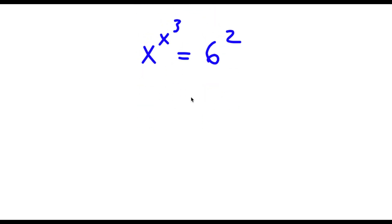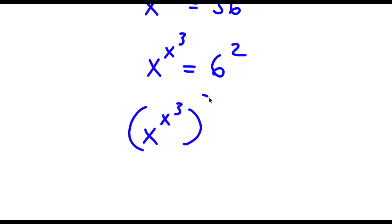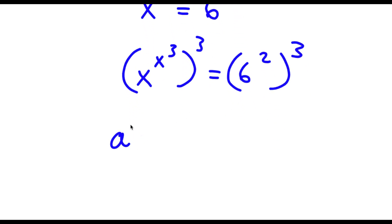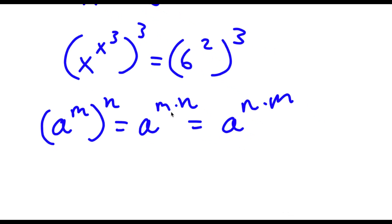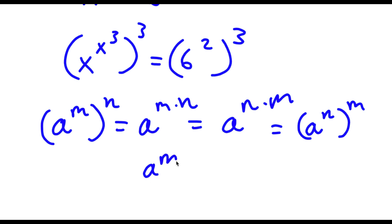Now I'm going to be taking the power of 3 on both sides. So I have x to the power of x to the power of 3, all to the power of 3, is equal to 6 to the power of 2 to the power of 3. If I have something in the form a to the power of m to the power of n, this is the same as a to the power of m times n, and since m and n are interchangeable, a to the power of m to the power of n equals a to the power of n to the power of m.